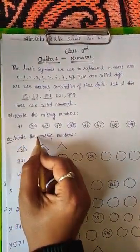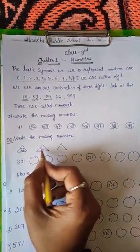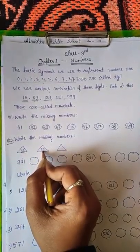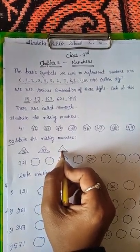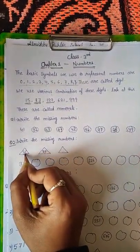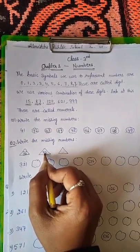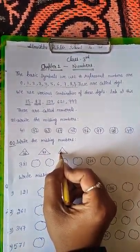Now next question is write the missing numbers. So what comes before 37 and what comes after 37? So before 37 is 36. And what comes after 37? That is 38.